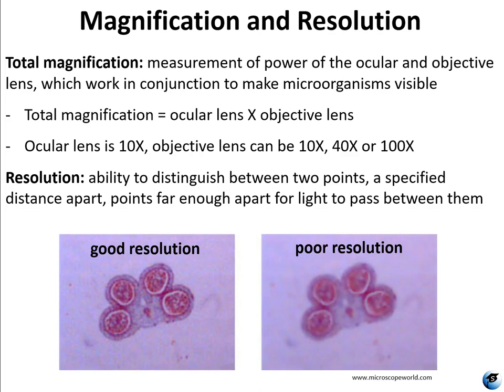Total magnification is the measurement of the power of the ocular and the objective lens, which work in conjunction. The light gets magnified by the objective first and then again by the ocular, so total magnification takes both into account. In this lab, all of our microscopes have an ocular lens magnification of 10x. If you're using a 10x objective, the total magnification is 100x. Using the 40x objective gives 400x total magnification, and using the 100x objective gives 1000x total magnification.